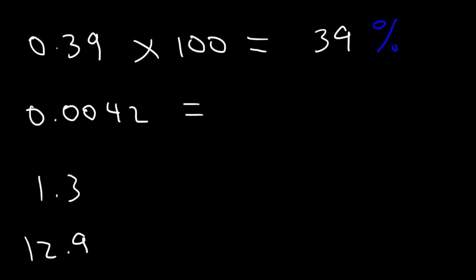Now for the second example, I'm going to move the decimal point two units to the right. So it's just before the four. So 0.0042 is 0.42%.